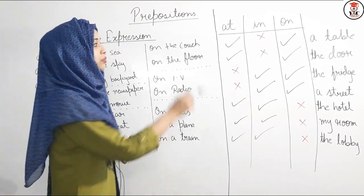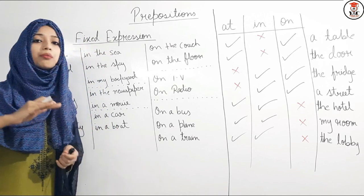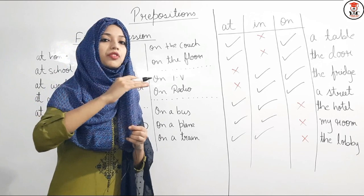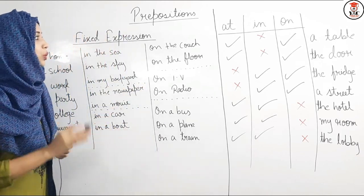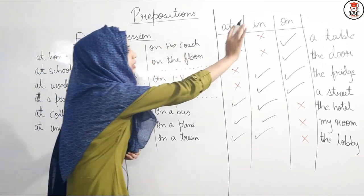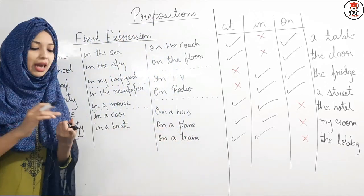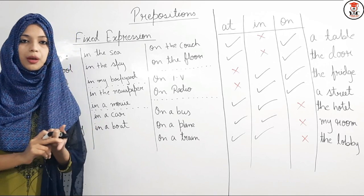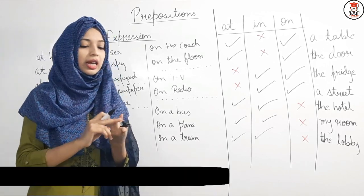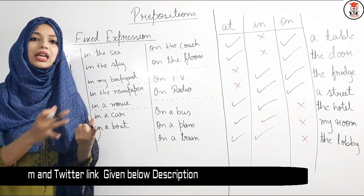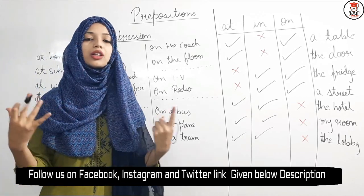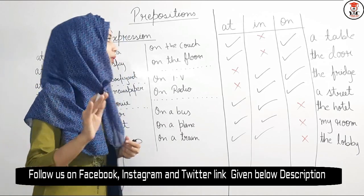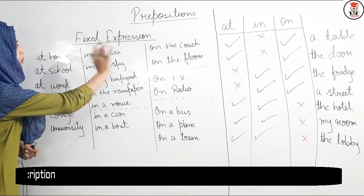To summarize: AT is used to show location; IN is used when something or someone is inside any other bigger space or thing; ON is used when something is placed on the top surface of something else. I hope the difference between AT, IN, and ON is now clear.